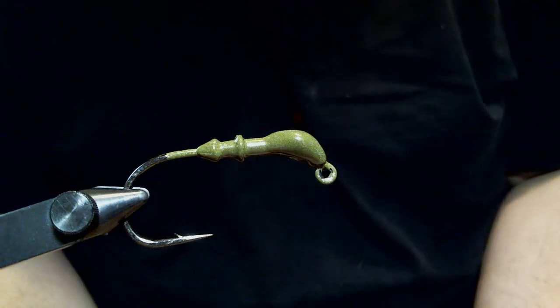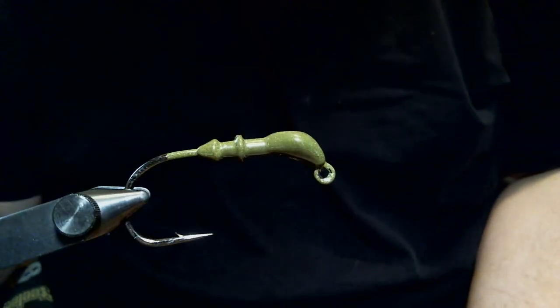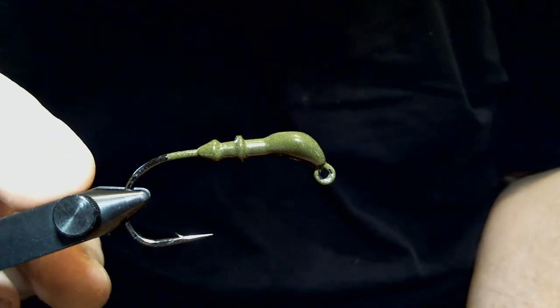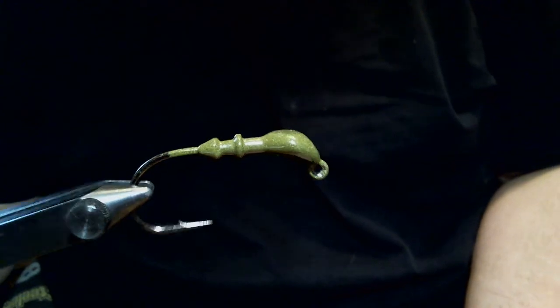Hey everyone, what we're going to do today is a Green Pumpkin Arky Jig. In the vise we have a 3/8 ounce Arky Jig with a 3 aught Mustad 32786 hook.